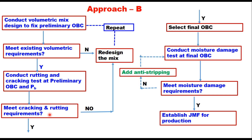Once this is done, you conduct the moisture damage test at the final OBC. If it meets the requirement, that is your final job mix formula. If it does not meet the requirement, you add anti-stripping material — liquid, lime, or other — conduct the moisture damage test again, and reach satisfaction. That is your job mix formula for production.